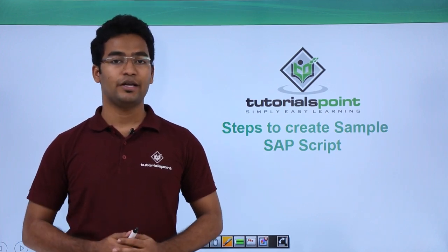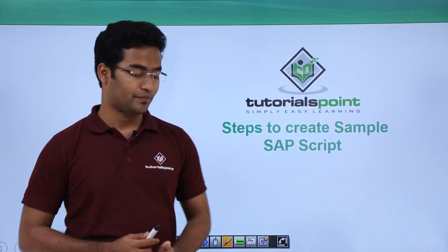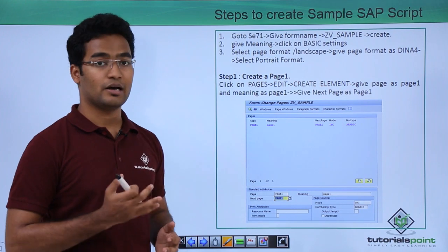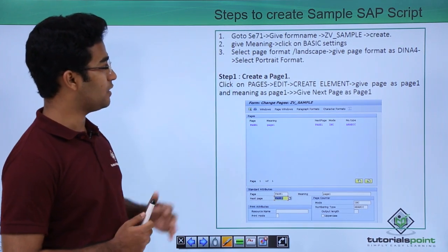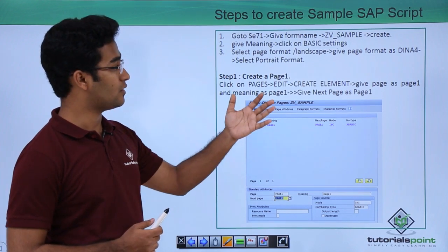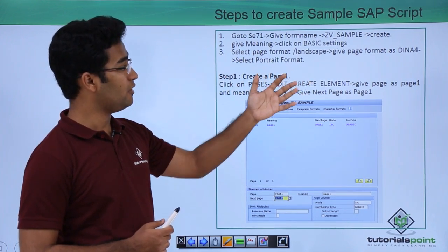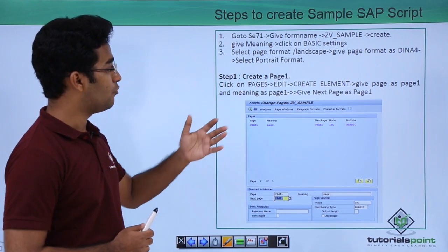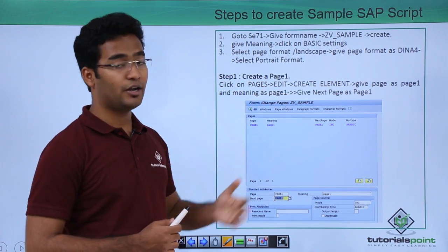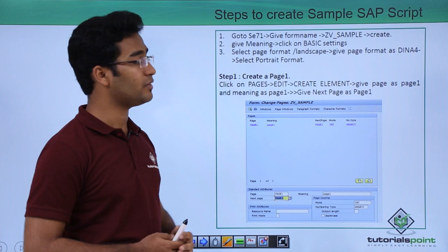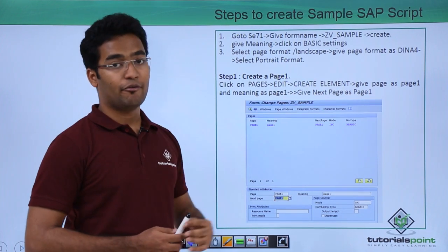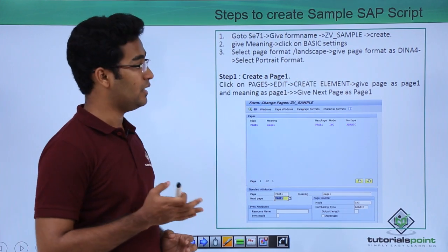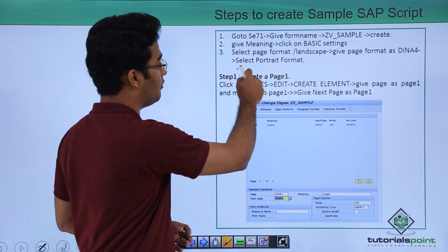In this video we will see the steps to create a sample SAP script. The main steps to create a SAP script start with going to SE71, then we create our form named ZV_sample. We provide a meaning, click on basic settings, provide a page format as portrait or landscape. In this case we are providing it as landscape, page format as DIN A4, and selecting portrait format.